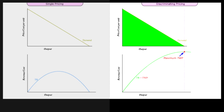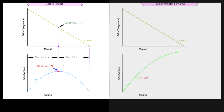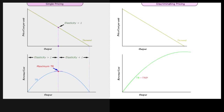This total revenue generated through perfect price discrimination can be called total willingness to pay, TWP. Because single price is an average price, the single pricing seller's TR is affected by the elasticity of demand, maxing out when elasticity is equal to 1. Because discriminating price is a marginal price, the price discriminating seller's TR, that is TWP, maxes out only when price is 0.